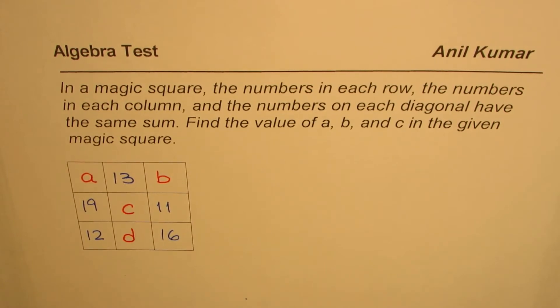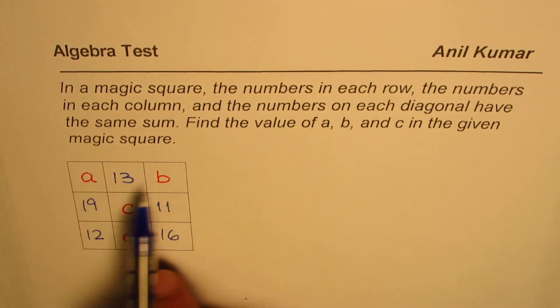You can pause the video, copy the question, answer, and then look into my suggestions. Now, whenever you have a magic square like this, we need to create some relation between the variables.